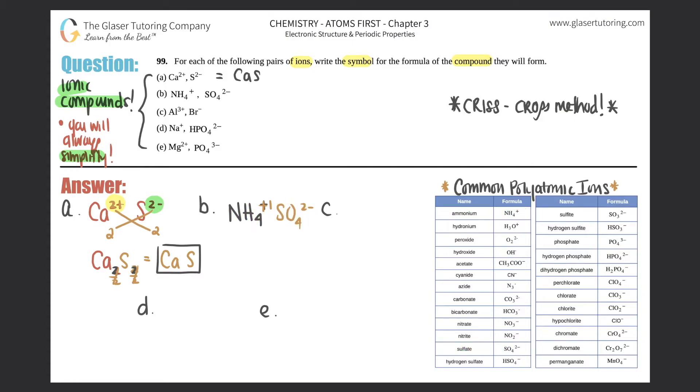You can make compounds with polyatomic ions, but the same rules apply. This plus one criss-crosses down to tell me I need one whole sulfate, and the SO₄ - the four is included in your compound. This two minus criss-crosses down to tell me I need two ammoniums, and ammonium is NH₄.